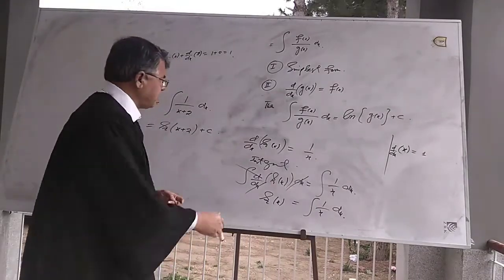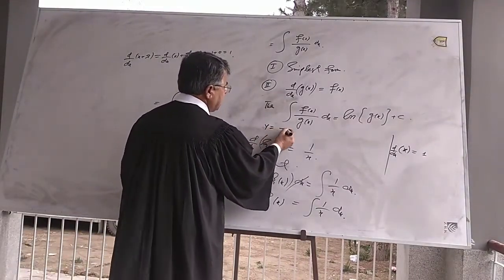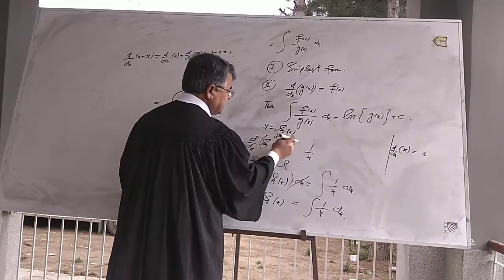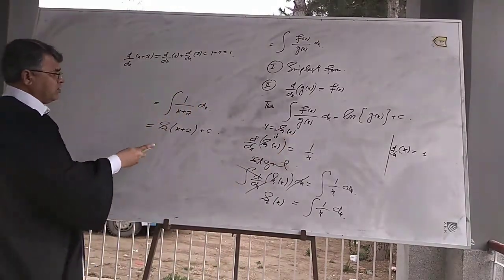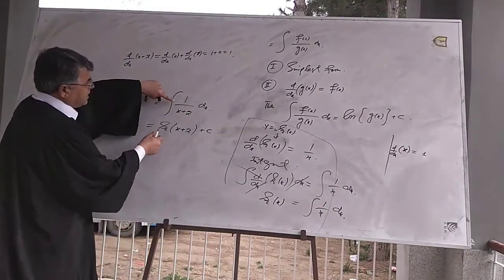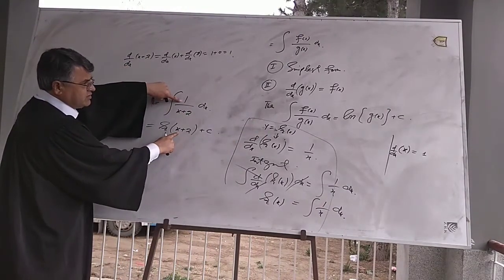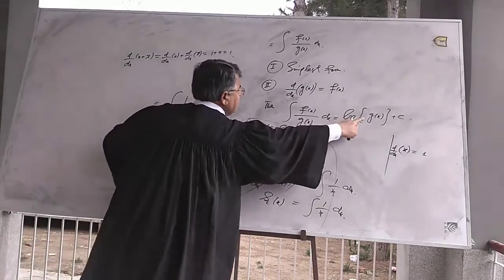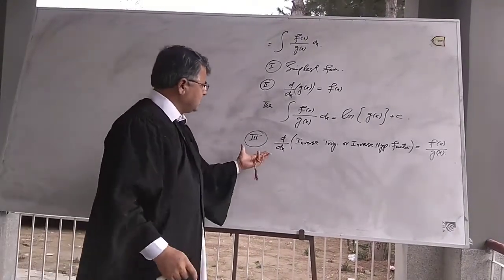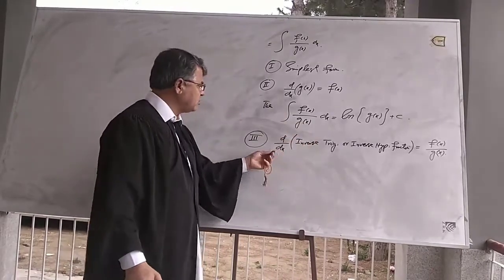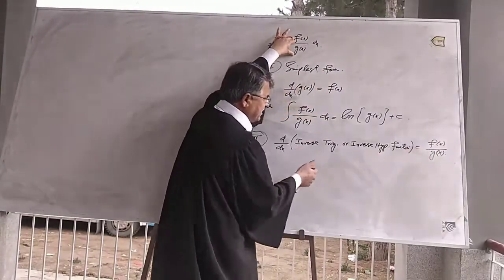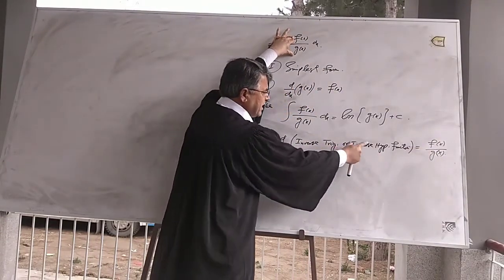This is a counter example drawn from the derivative of the logarithmic function. That is, when y equals log of x, the derivative of this function is equal to 1 over x. According to this condition, the integration of a function in the form f divided by g is equal to log of the numerator plus c. Now if this condition fails to hold, we have to check whether the function f divided by g is the derivative of an inverse trigonometric or inverse hyperbolic function.